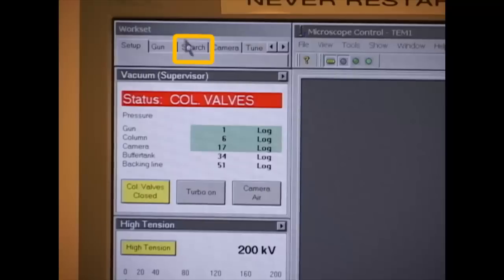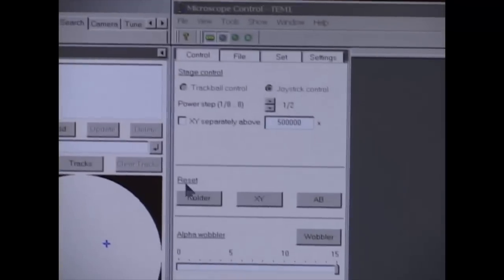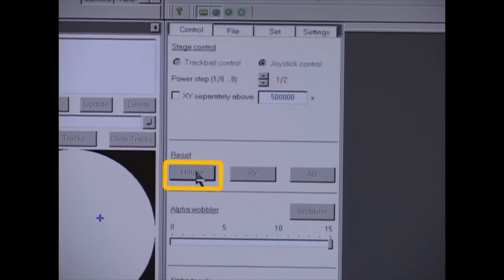Then go to Search. Click the arrow flap. And in the Reset section, click Holder to put the holder in the original position and angle.